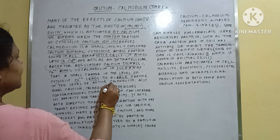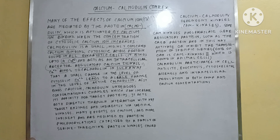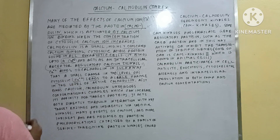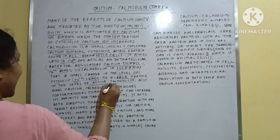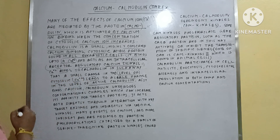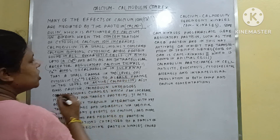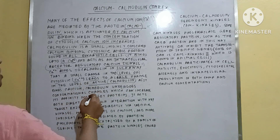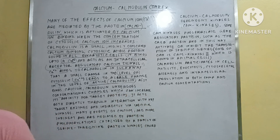The binding of calcium ions with the protein molecule occurs in such a way that any small change seen in the level of calcium ions creates a large change in the active calmodulin level. If any very small change occurs in the binding process of calcium ions with the calmodulin molecule, this creates a large change in the active calmodulin molecule.